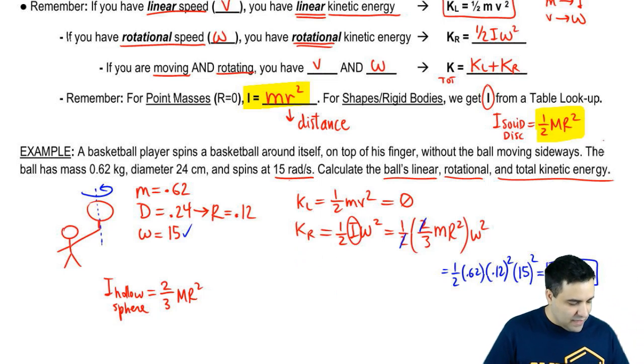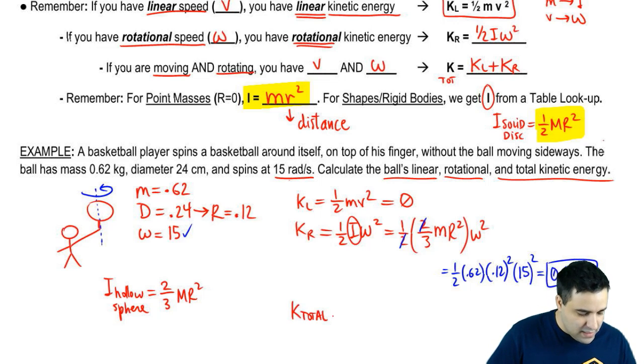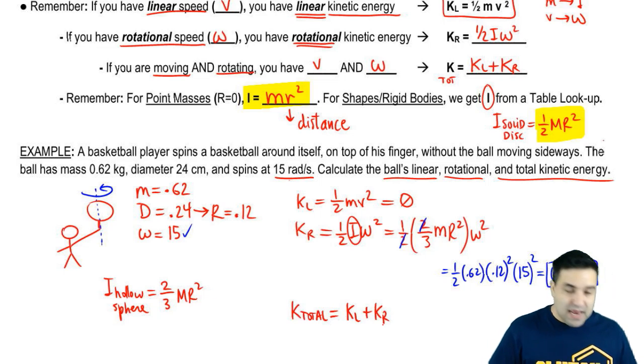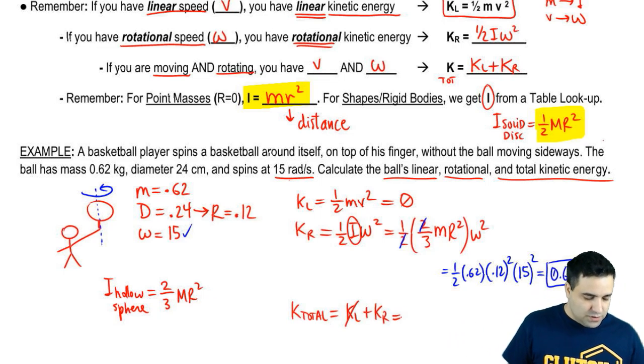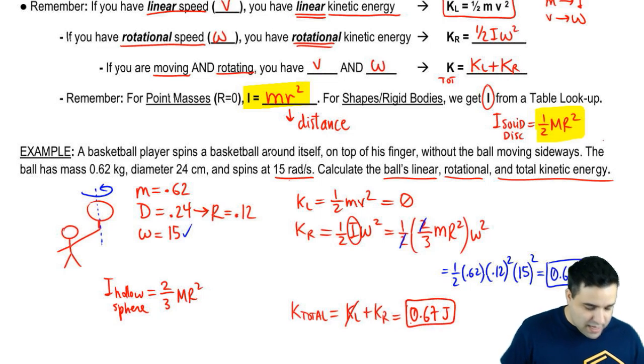And so that's it. For the last part, we want to do the total kinetic energy. Remember, the total kinetic energy is just an addition of the two types, kinetic linear plus kinetic rotational. There is no kinetic linear, so the total kinetic energy is just 0.67 that's coming from the rotational kinetic energy.